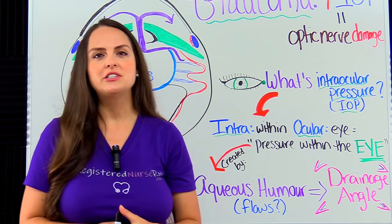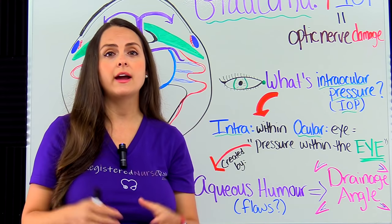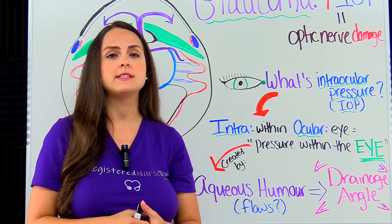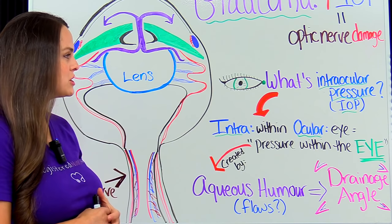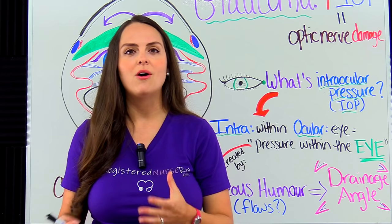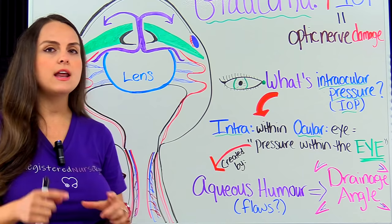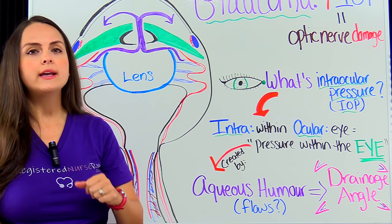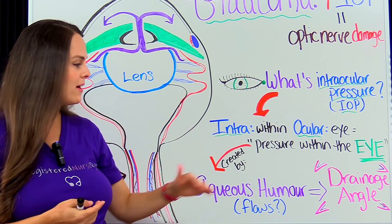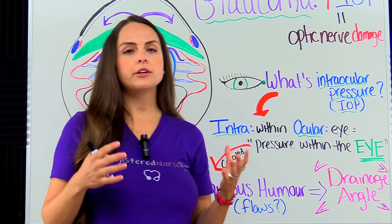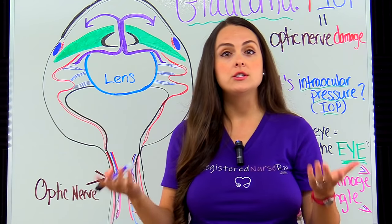Let's talk about the pathophysiology of glaucoma. To truly understand this disease process, we have to identify the key players: the intraocular pressure (IOP) and the aqueous humor. Intra means within and ocular means eye, so IOP is the fluid pressure within the eye. The fluid we're specifically talking about is the aqueous humor. Intraocular pressure is calculated by the production rate and the drainage rate of this aqueous humor.